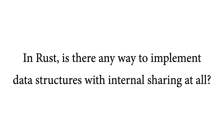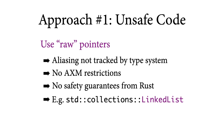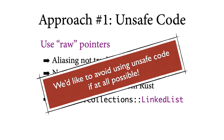So this all begs the question: in Rust, is there any way to implement data structures with internal sharing at all? It turns out the answer is yes — there are two approaches, and both are effectively ways of working around the restrictions of the AXM discipline, but neither is really satisfactory. The first approach is to use unsafe code. Rust provides a variety of unsafe features as an escape hatch for programmers when the AXM discipline gets too restrictive. For example, you can use raw pointers where aliasing is not tracked by the type system — this is what Rust's linked list library uses in its implementation of doubly linked lists. But once you use raw pointers, all bets are off, and the language offers no safety guarantees.